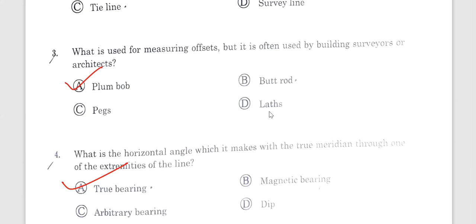Question number 3. What is used for measuring offset but often used by building surveyor and architect? The answer is plumb bob.